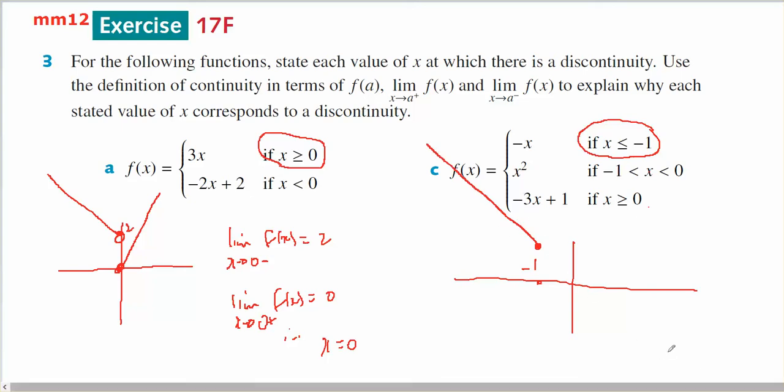It would normally be y equals minus x for all of it, but it's just for less than negative 1. Between negative 1 and 0, it's equal to x squared. And if I put negative 1 into there, negative negative 1 is equal to 1. And I put negative 1 into x squared, negative 1 squared is equal to 1. So I'm not discontinuous at that point.